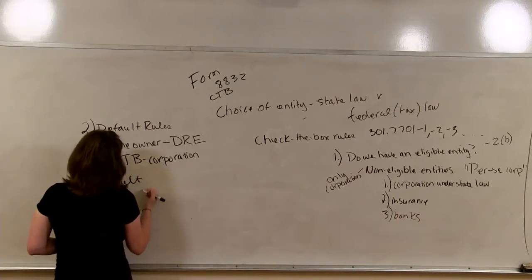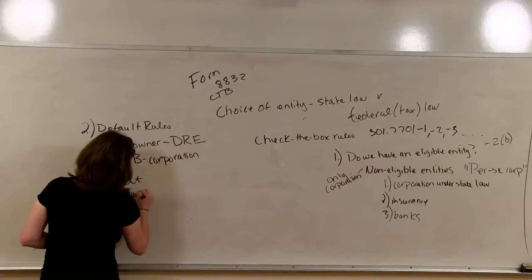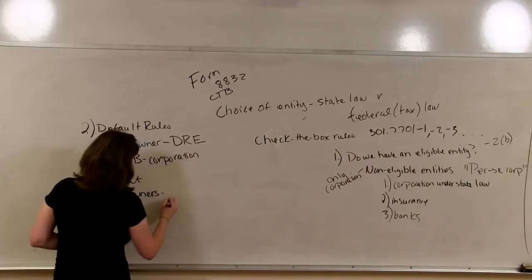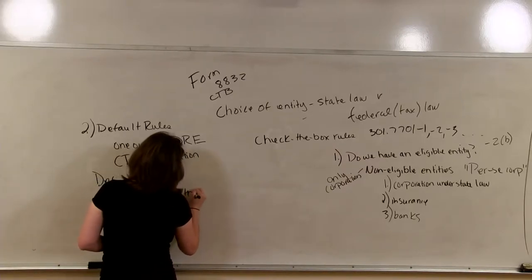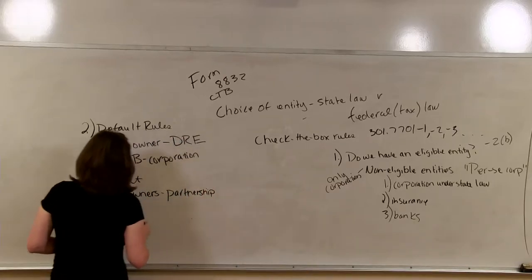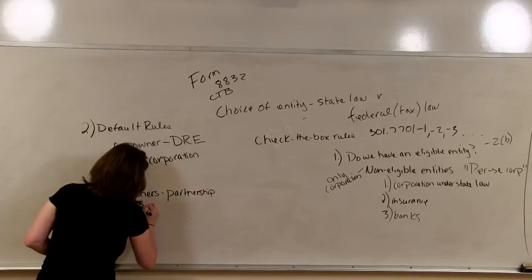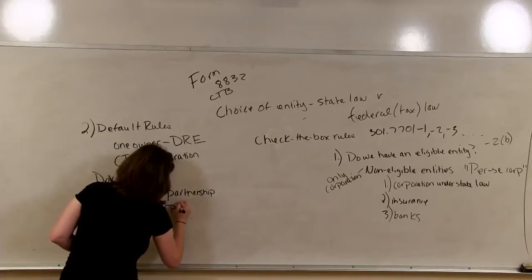Another default rule: what if you have two owners? Then the default is you're treated as a partnership for tax purposes, or you can check the box to be taxed as a corporation.